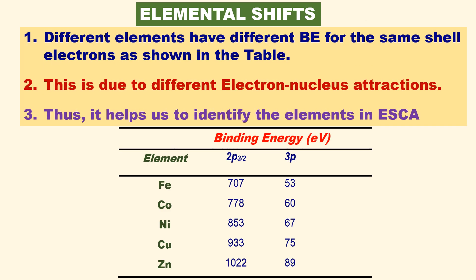Similar to chemical shifts, there are also elemental shifts. Different elements have different binding energies for the same shell electrons. For example, iron has a binding energy for the 2p orbital electron of 707 eV. For cobalt and zinc, which are elements next to iron in the same period, as we go from left to right in the same period, the binding energy increases. This occurs due to different electron-nuclear interactions, and it helps to identify different elements in ESCA.